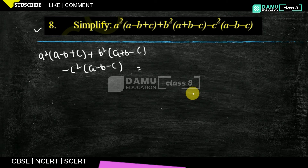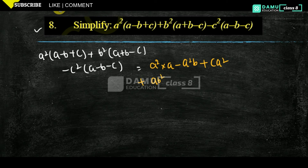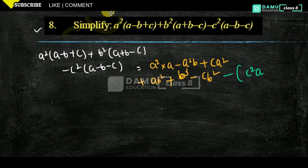If you observe here, for everything a minus symbol and plus c is there. Just multiply those values with the next one: a squared into a, minus a squared b, plus a squared c, plus ab squared, plus b cubed, minus cb squared, minus c squared a, minus c squared b, minus c squared c.